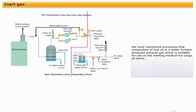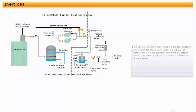We have mentioned previously that combustion of fuel oil in a boiler furnace produces exhaust gas which is suitable for use as the inerting medium for cargo oil tanks. The exhaust gas still needs to be cooled and treated before it can be used as inert gas, and in particular, the sulphur-based products of combustion need to be removed.